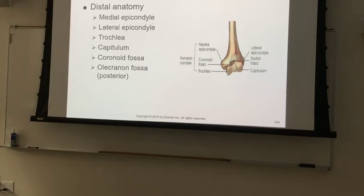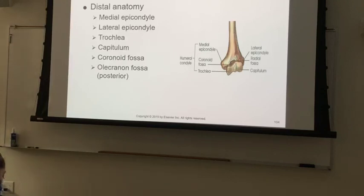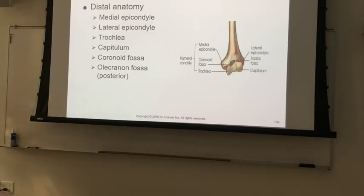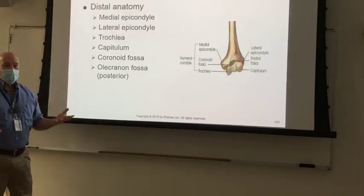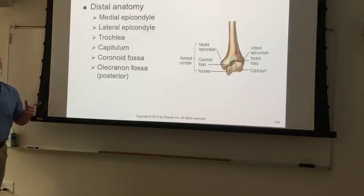On the distal humerus we've got a medial condyle, lateral condyle, medial epicondyle, and a lateral epicondyle. The condyles themselves — the articular surfaces — are what we call the trochlea and the capitulum. The trochlea and the capitulum articulate with the bones of the forearm. How are you going to keep these two straight? You've got to memorize the words trochlea and capitulum, but here's how you keep them straight.